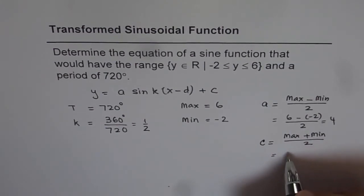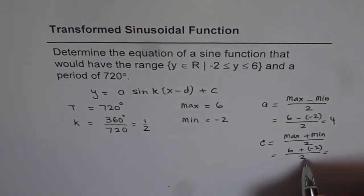So we get 6 plus minus 2 divided by 2 which is 6 minus 2, 4 divided by 2 as 2. So that is the axis.